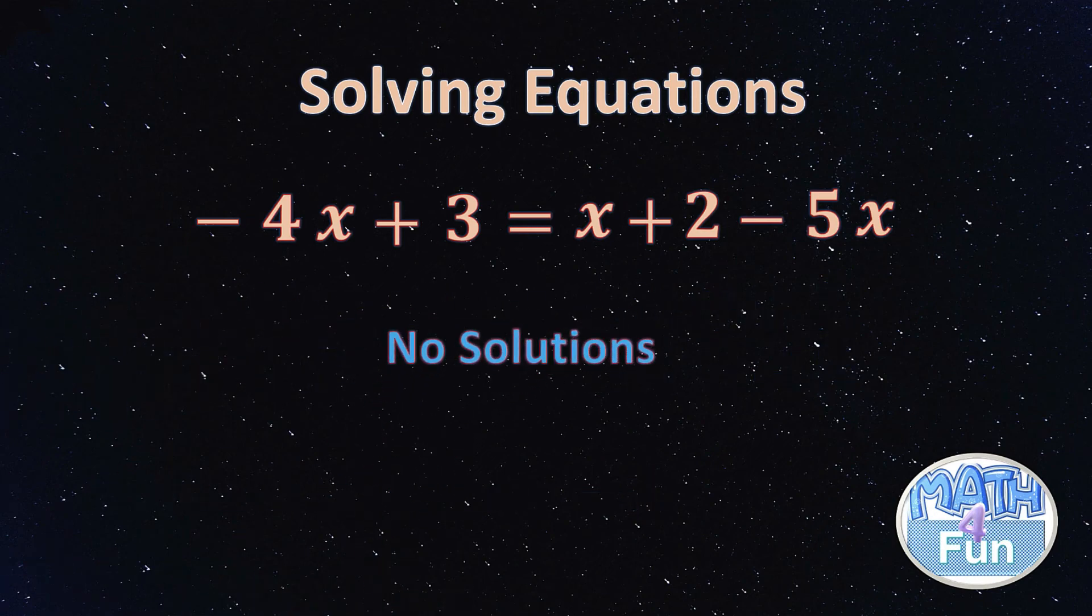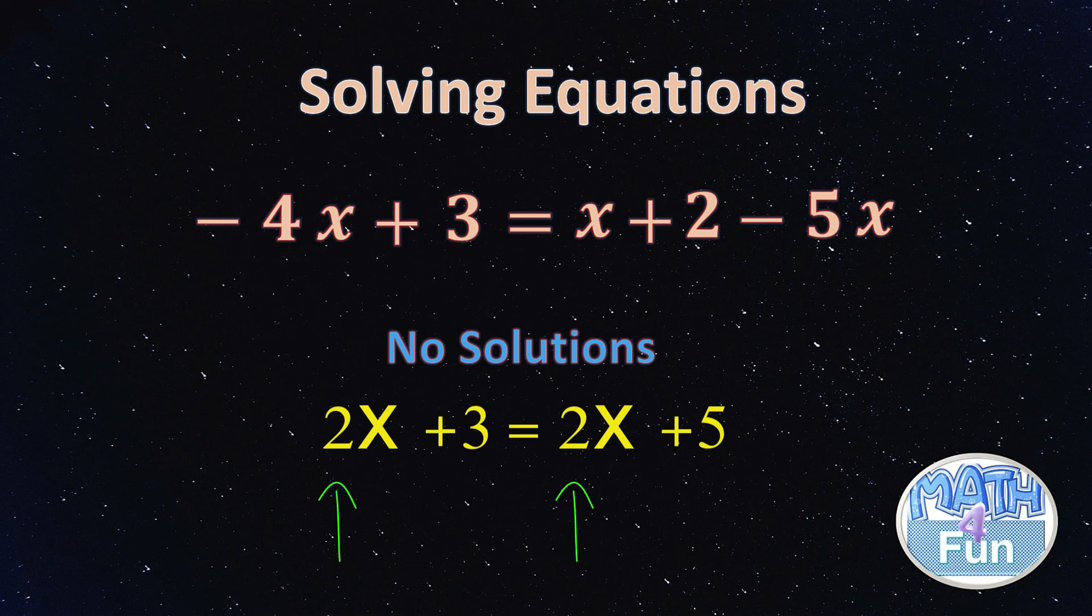There's no solution for this equation. You can make your decision straightforward once you have the variable x multiplied with the same number on the left side of the equation and the right side of the equation, but the constants are different.